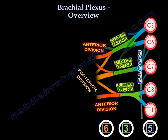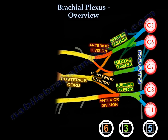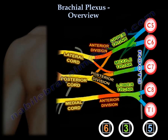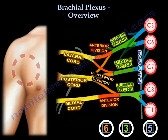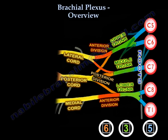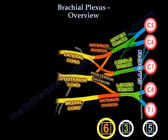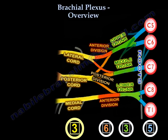Some of these divisions join to give you cords: the posterior cord, the lateral cord, and the medial cord. These cords are located in the axilla. So the running total is five roots, three trunks, six divisions, and three cords.